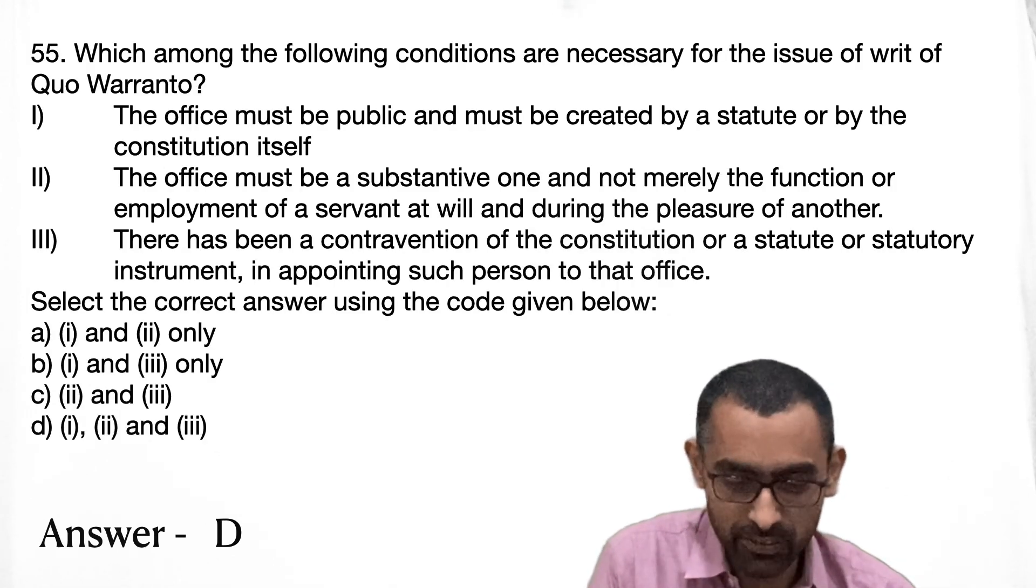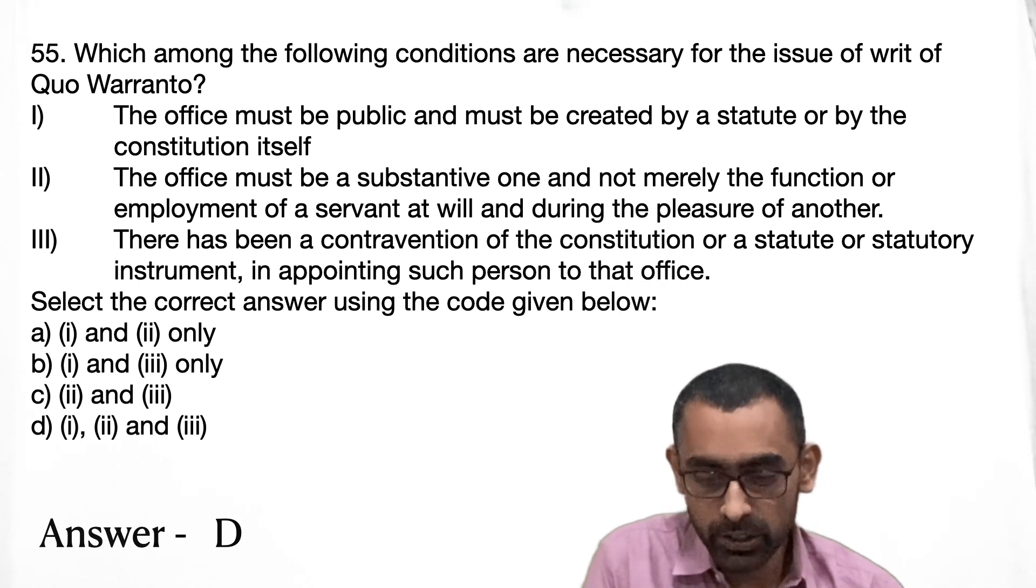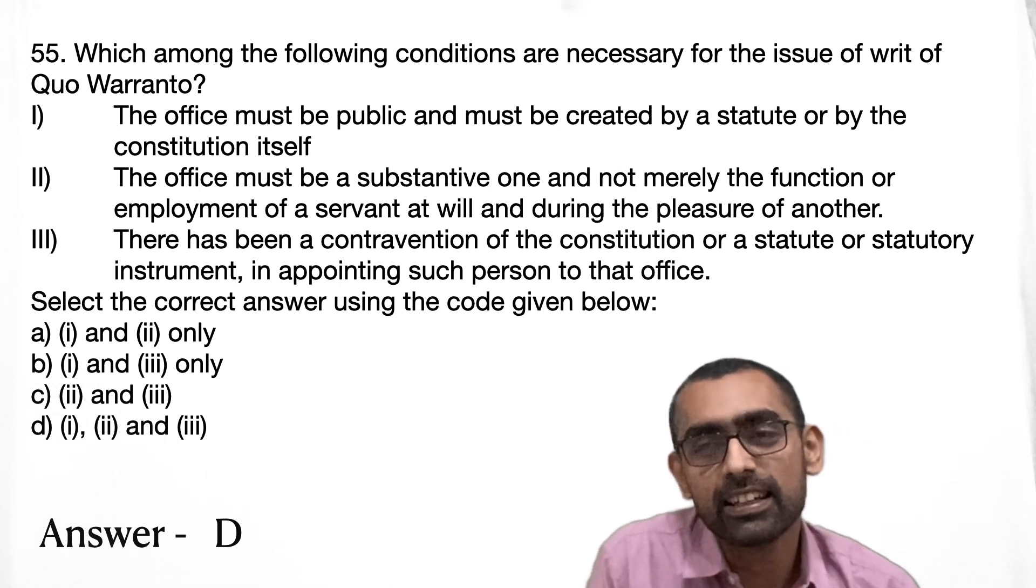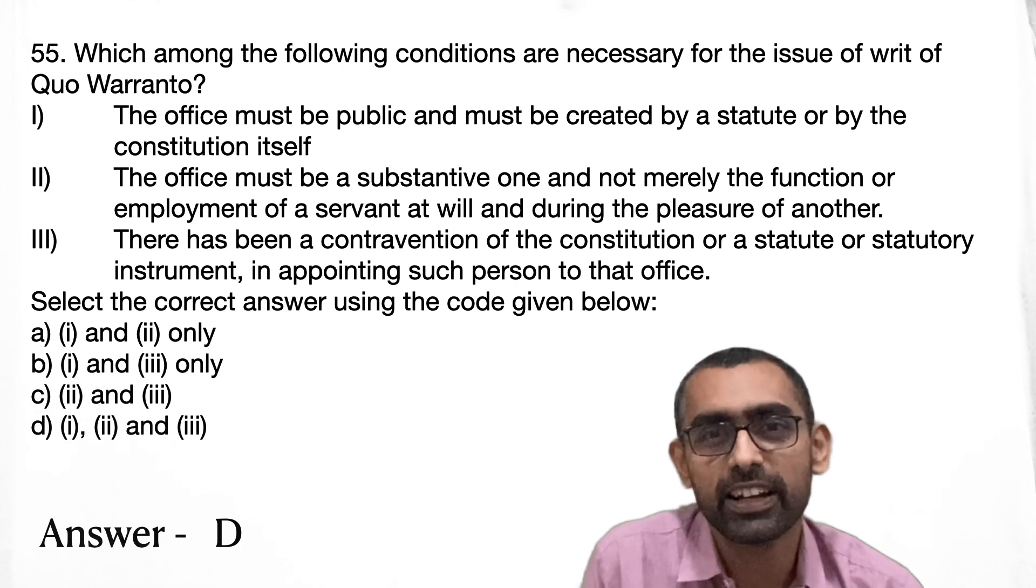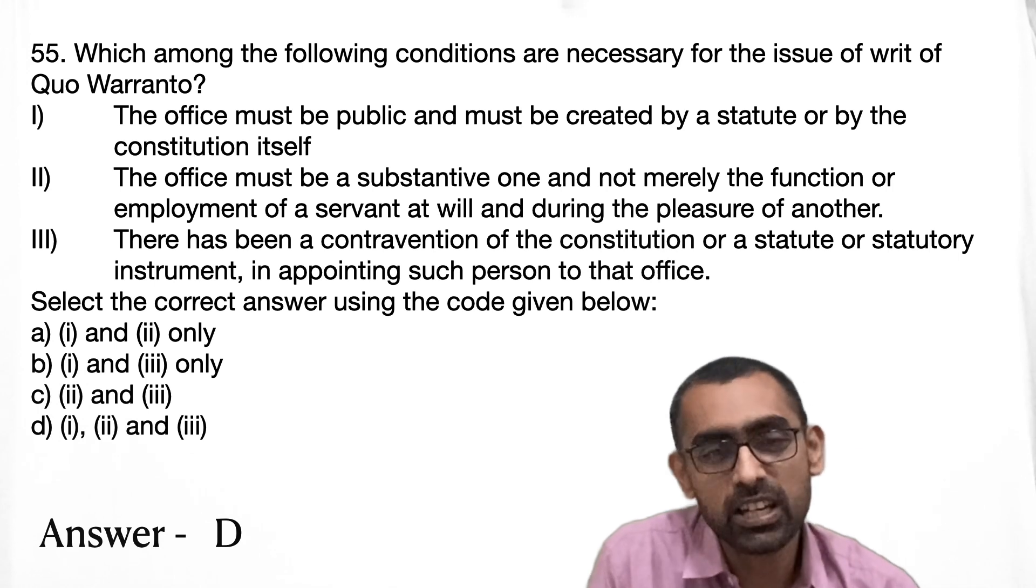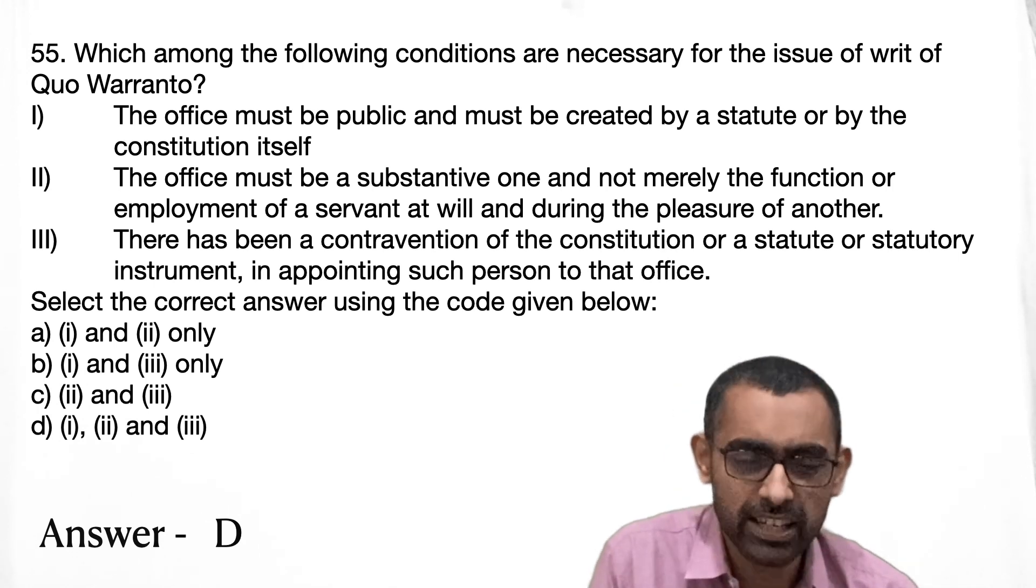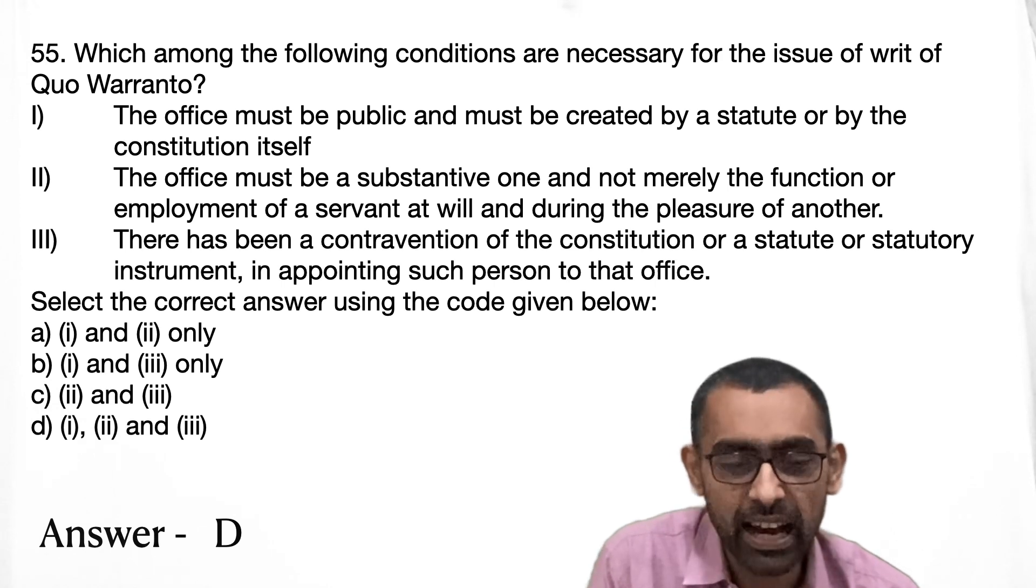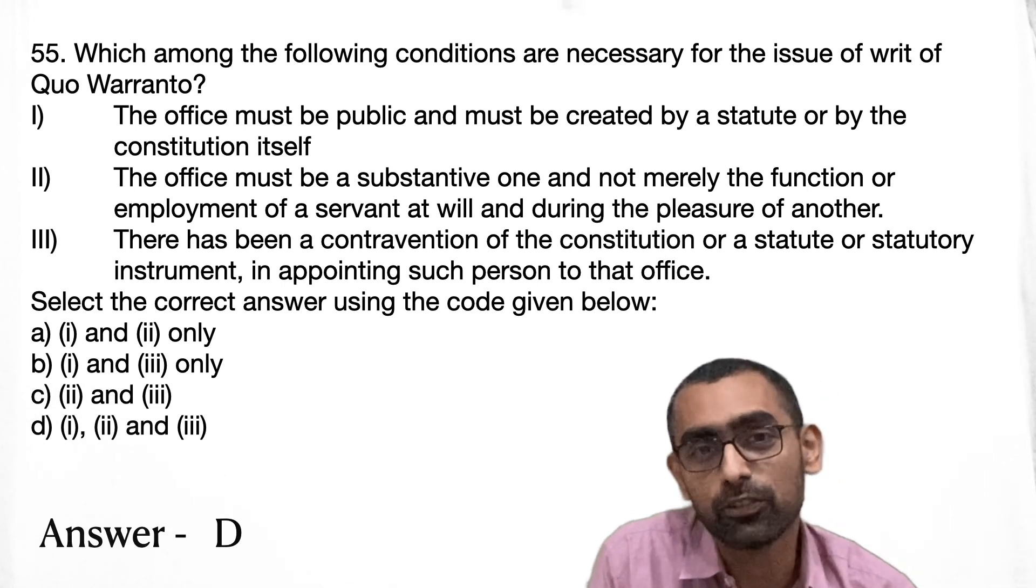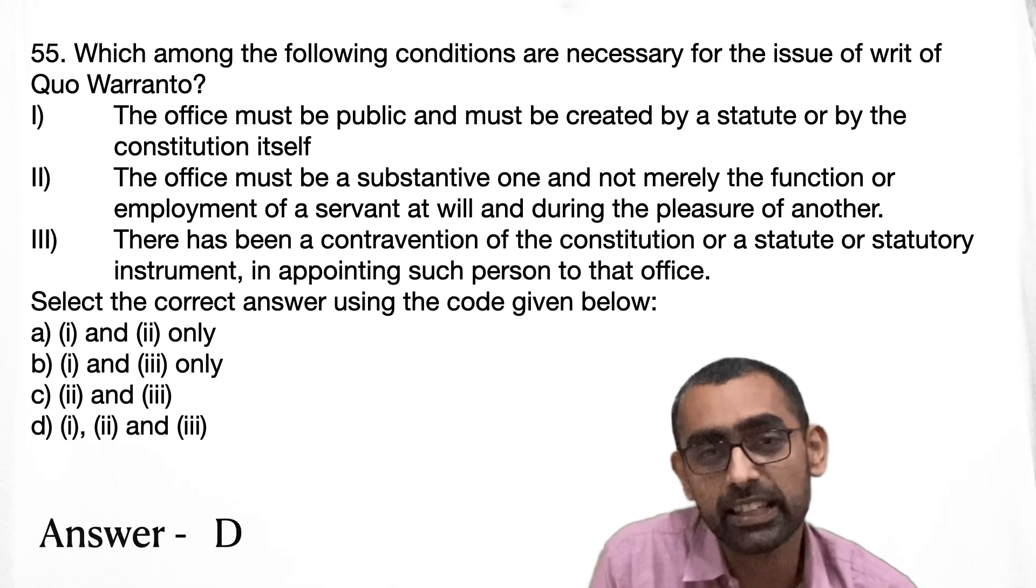Moving on to the next question, which is basically question number 55 is about the writ quo-warranto. Now, there are various kinds of writs are there. And if you have read the basics of Indian polity, then you know what is this writ and where it is used. And it's a very straightforward question. And in this case, all the options are correct. And all these options will be the conditions basically for this writ to be issued. So all three conditions are needed. And that is why the answer will be D, 1, 2, 3.